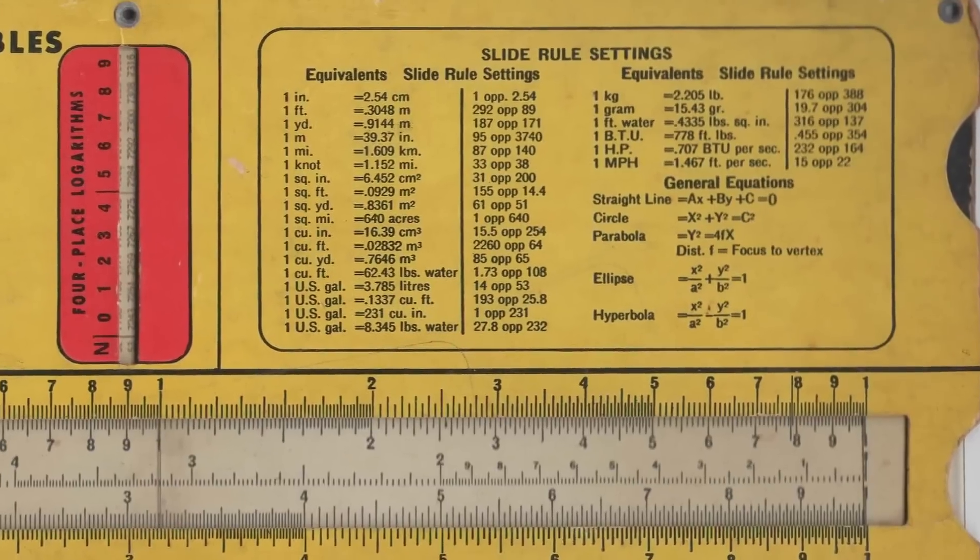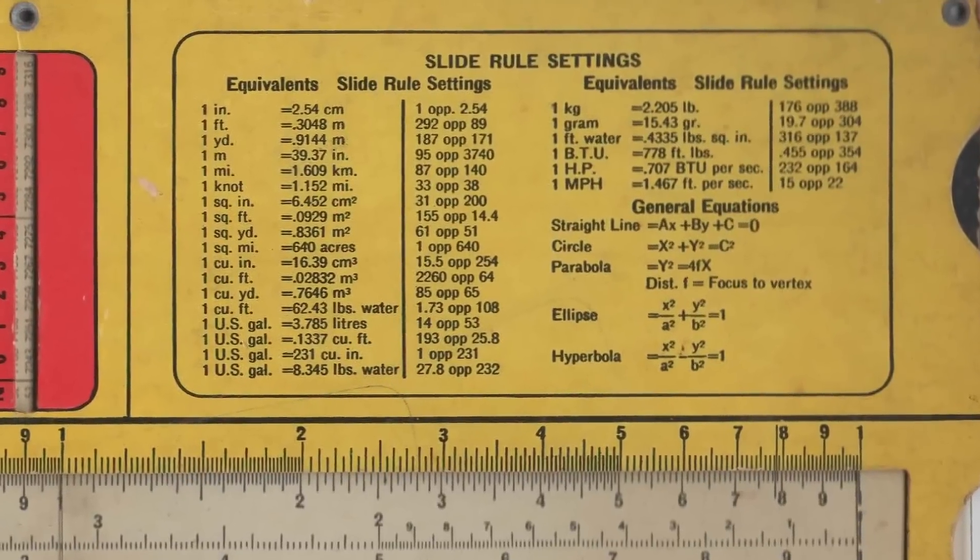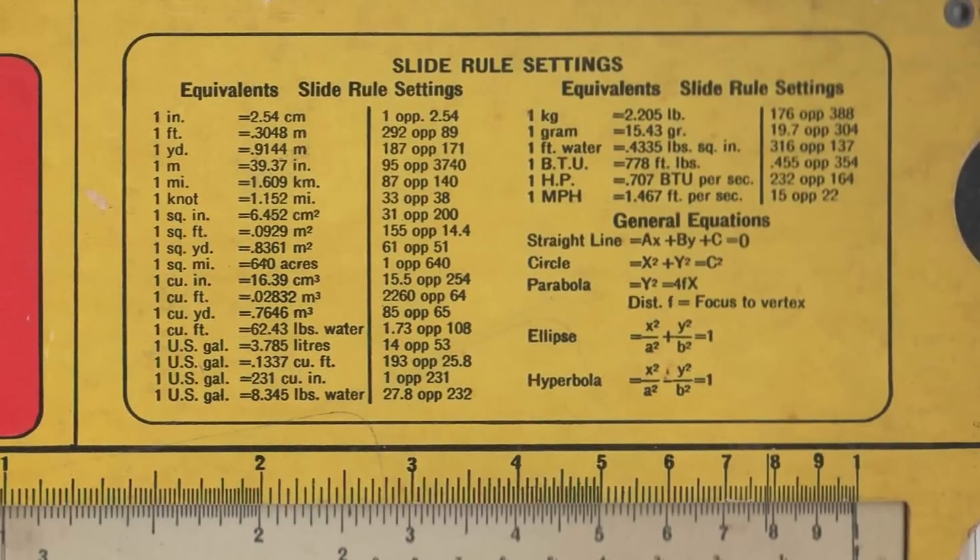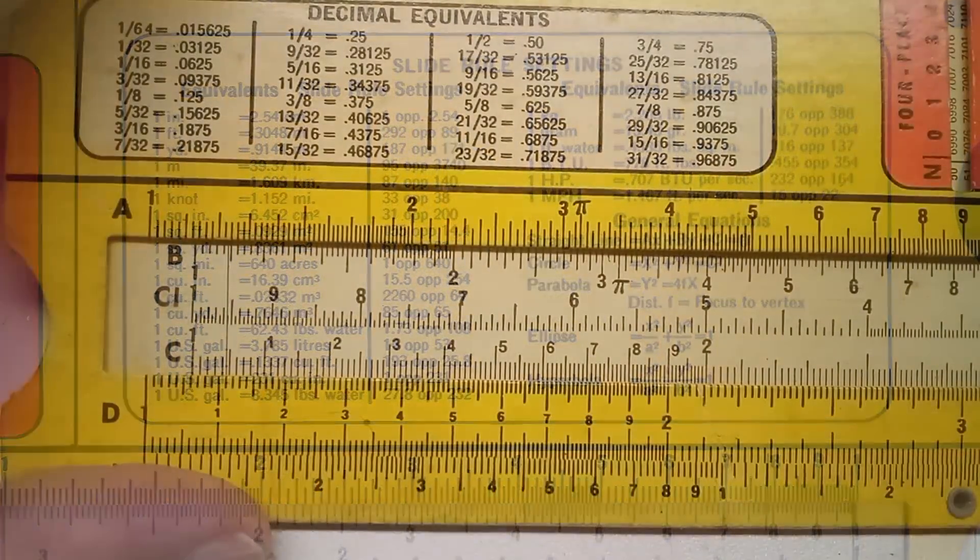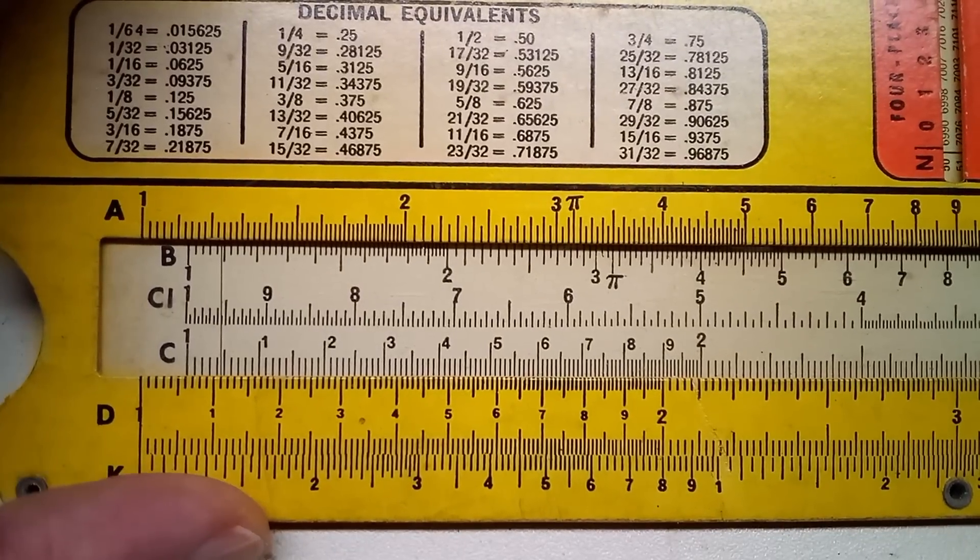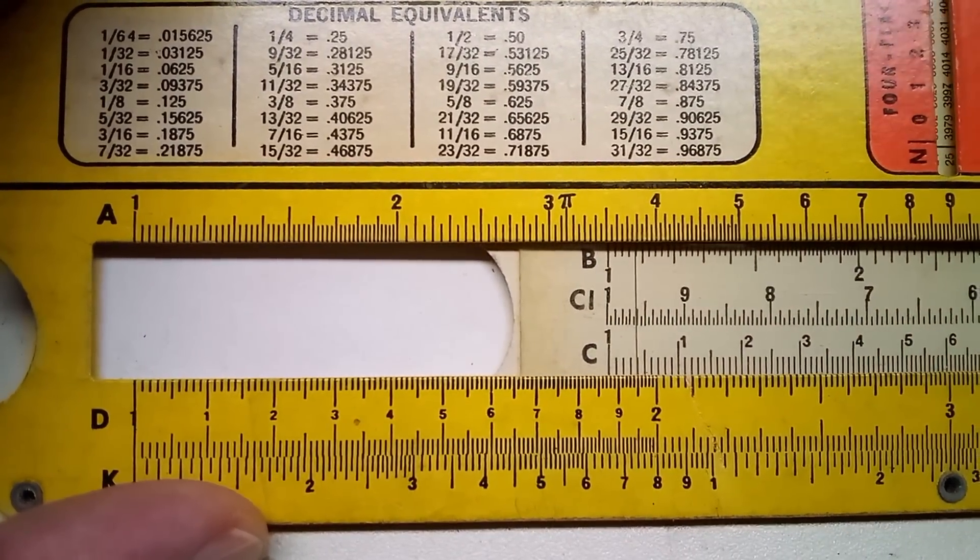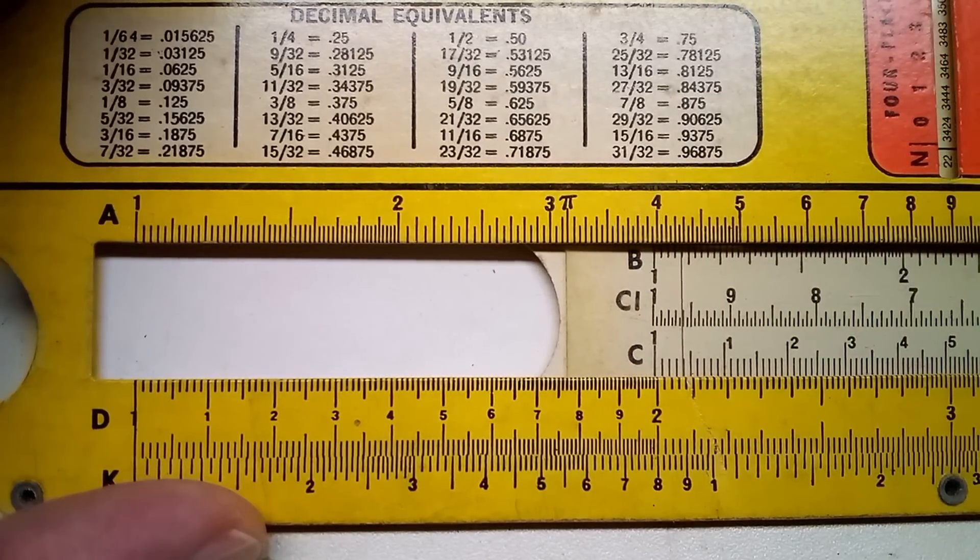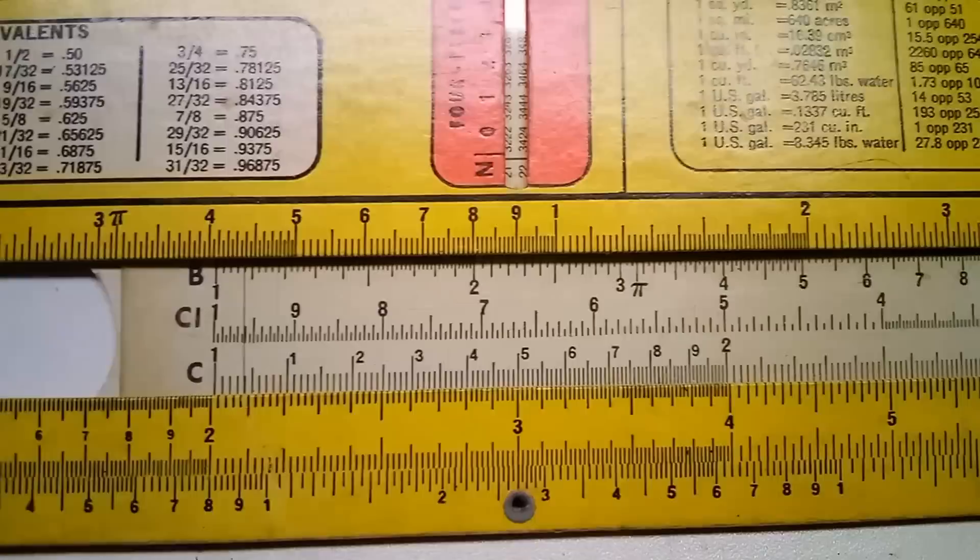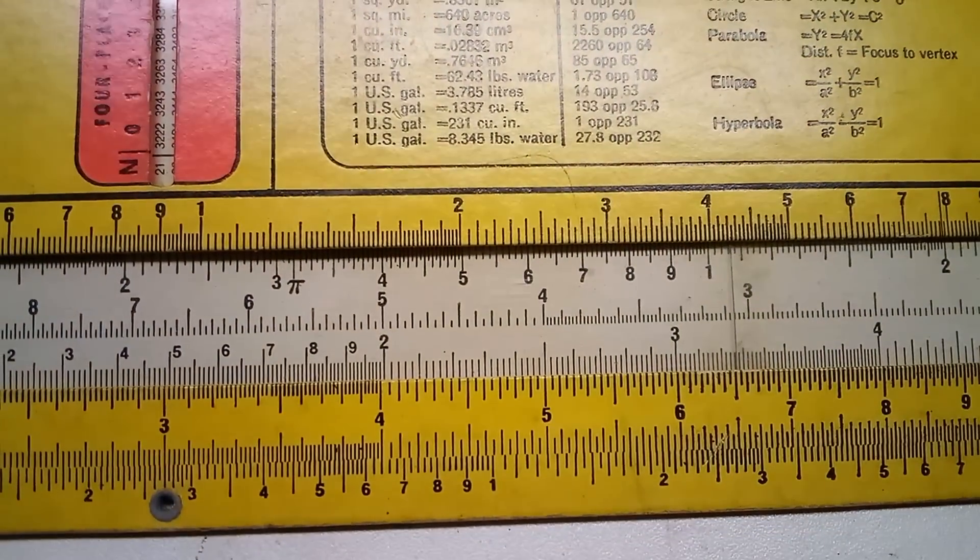So we can use this to convert stuff from normal to metric. Say if we wanted to convert inches to centimeters, we would need to set each inch opposite to 2.54. So to convert 2 inches into centimeters, we'd set the 1 on our C scale to the 2 on our D scale for inches, then set our cursor to 2.54 on the C scale.